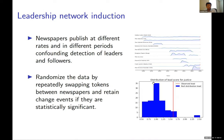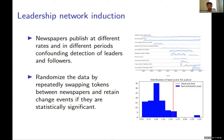One problem is that newspapers publish at different rates and during different periods — this can confound the lead/lag measure, since newspapers that appear later in the cycle are inevitably going to look like followers. To address this, we randomized the data by swapping tokens across newspapers and retained only those leadership events that remain statistically significant even after this randomization.